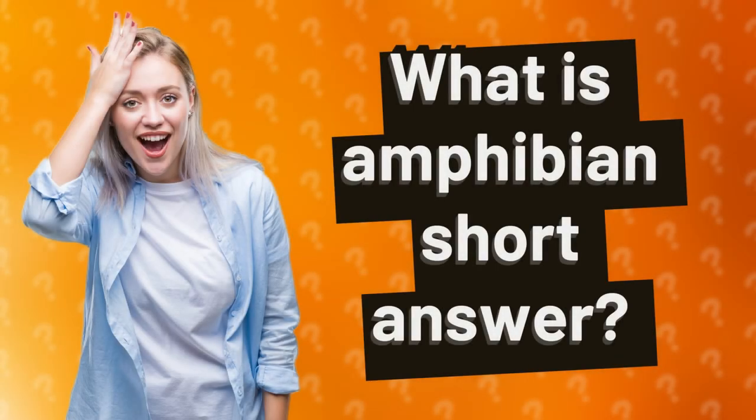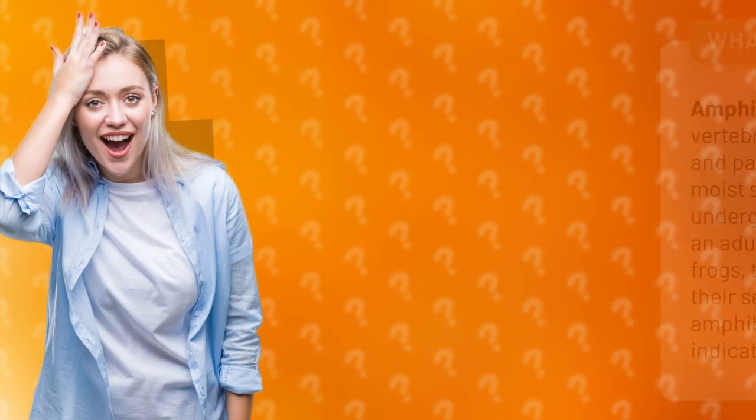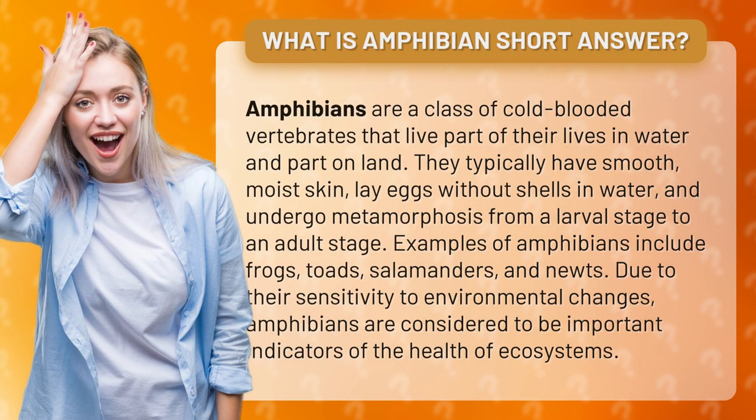What is amphibian short answer? Amphibians are a class of cold-blooded vertebrates that live part of their lives in water and part on land. They typically have smooth, moist skin, lay eggs without shells in water, and undergo metamorphosis from a larval stage to an adult stage.